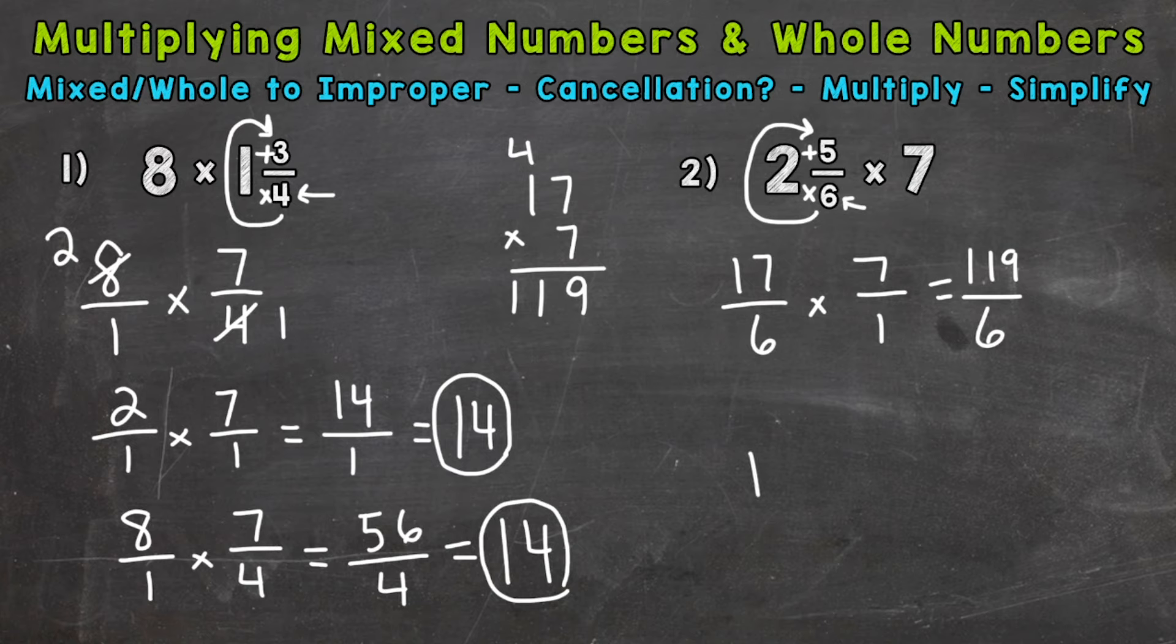So let's come down here. 119 divided by 6. So we'll start with 11 divided by 6, which is 1. 1 times 6 is 6. Subtract, we get 5. Bring down our 9.